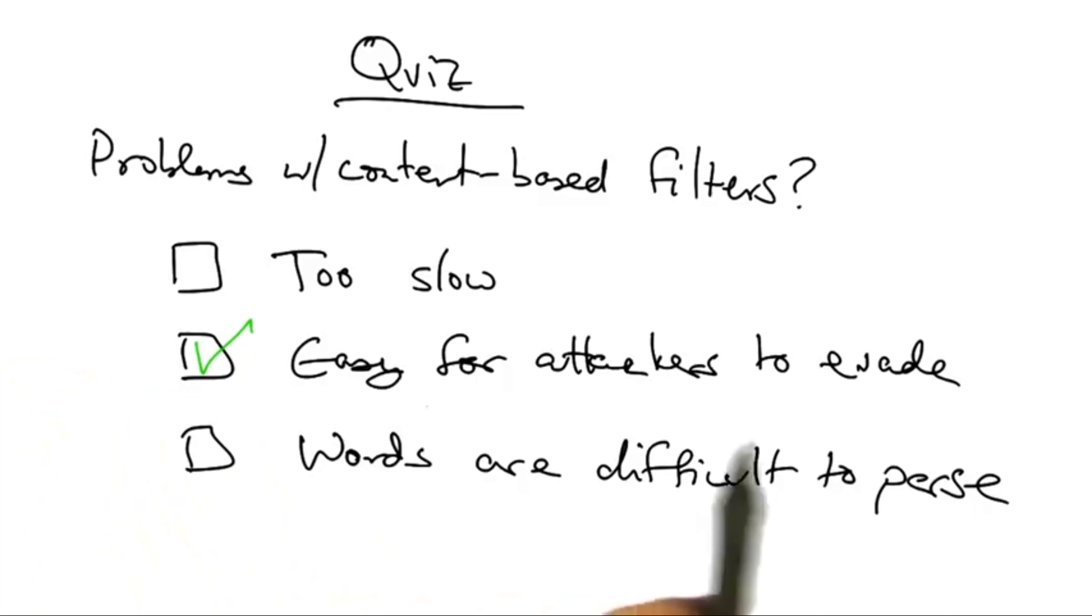As we discussed, content-based filters are easy for attackers to evade because they can very easily change the content of the message that is carrying the spam that they wish to deliver. They can embed their message in things like images, MP3s, Excel spreadsheets, and so forth, making it relatively difficult for the filter maintainers to keep up.